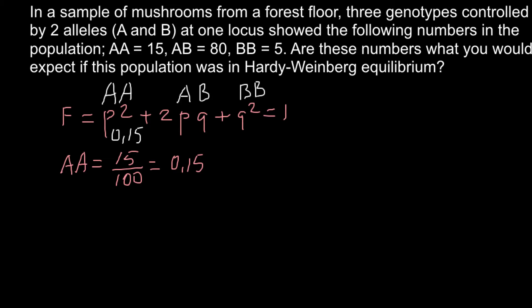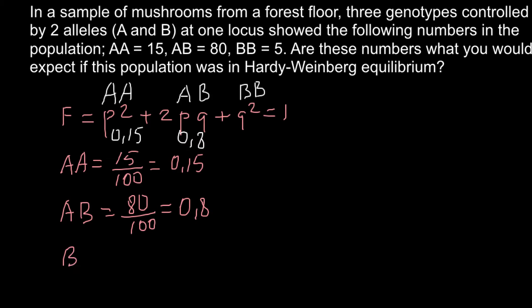The frequency of the AB genotype is 80 divided by 100, which equals 0.80. And the frequency of the BB genotype is 5 divided by 100, which equals 0.05, or 5%. So we have frequencies of 15%, 80%, and 5% for the three genotypes.